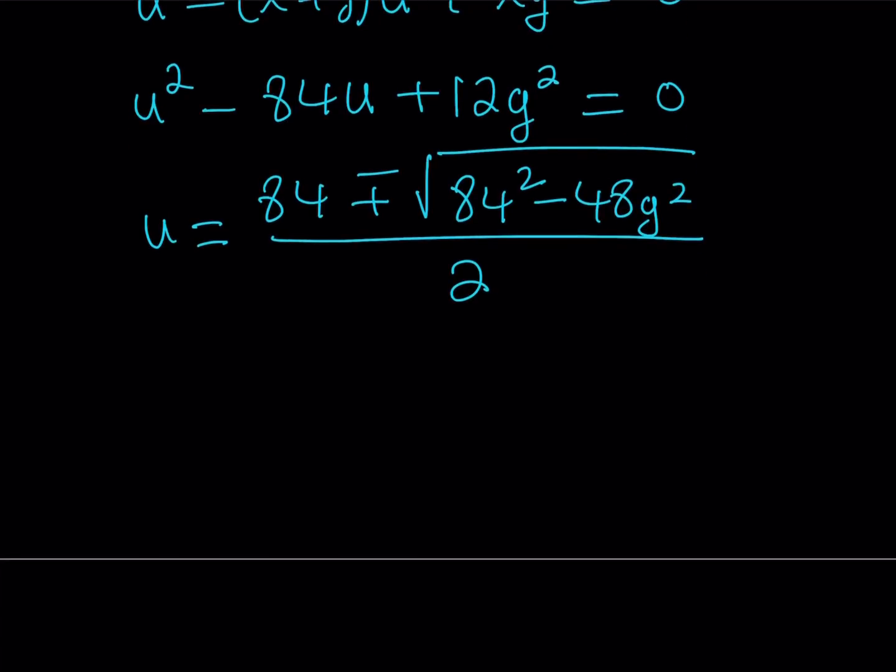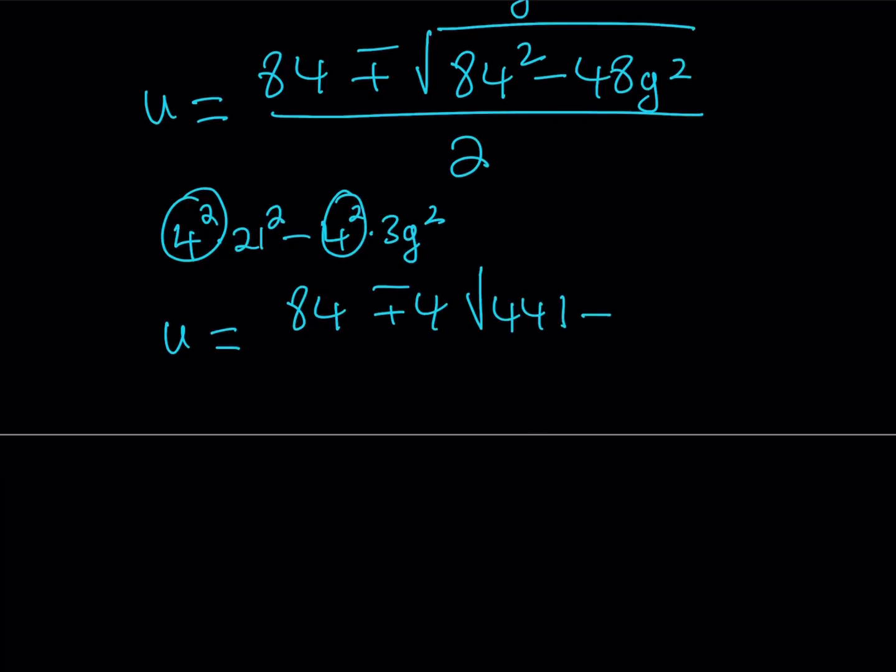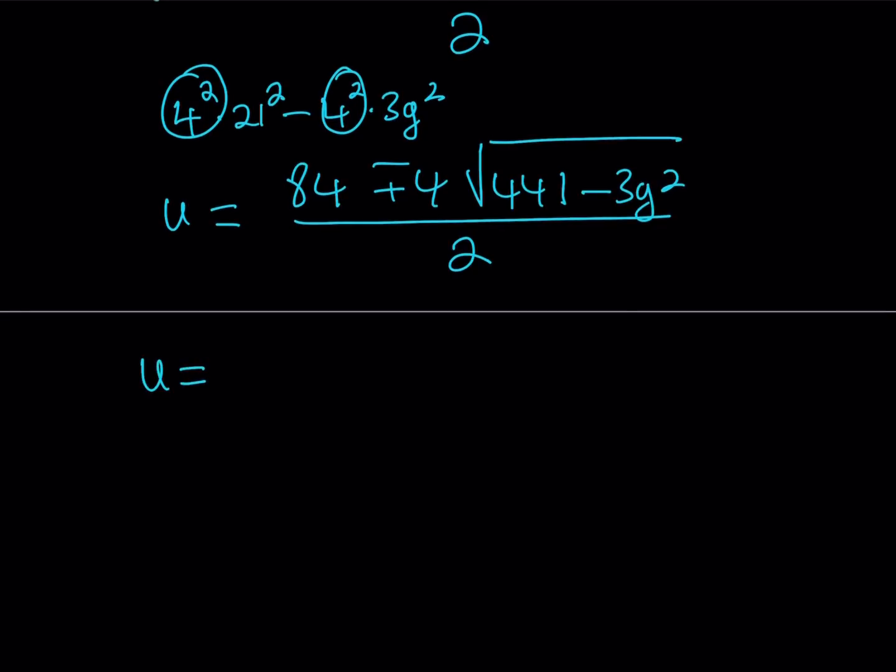The formula says U equals negative B, which is 84, plus minus the square root of B squared. In this case, I'm going to write it as 84 squared, that's a large number, but don't worry, I'm going to simplify it, minus 4AC. In this case, A is 1, so we're going to focus on C rather. It's going to be 4 times 12G squared, which is 48G squared. These are large numbers, but I'm going to simplify them. All over 2 times A, which is 2. Before I proceed, I'd like to simplify what's inside the radical because that's going to help me later. 84 can be written as 4 times 21, so that equals 4 squared times 21 squared. And 48 is 16 times 3, so it's like 4 squared times 3G squared. That means 4 squared can be taken out. When you square root 4 squared, it becomes a 4.